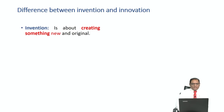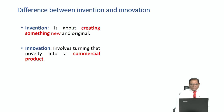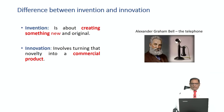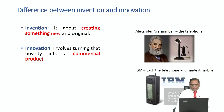Invention is about creating something new — an original creation. Innovation involves turning that novelty into a commercial product. For example, the telephone was invented by Alexander Graham Bell — that's an invention. Based on this invention, IBM created the first mobile phone — that is an innovation. So this is the difference between invention and innovation.